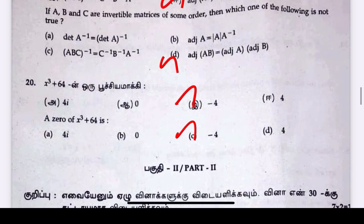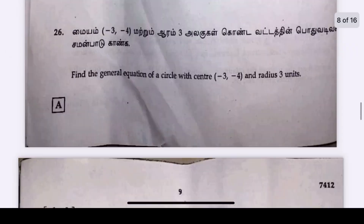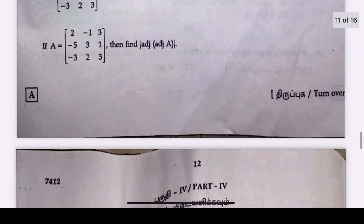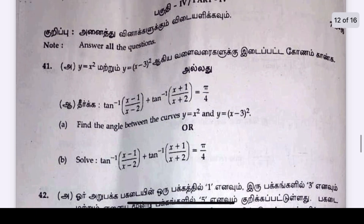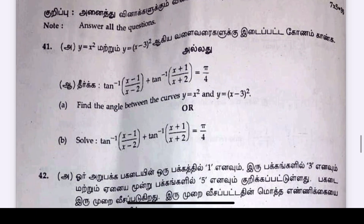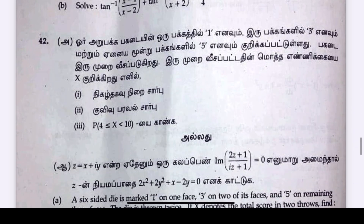This is the correct answer. The correct answer for the 12th question is y equal to x squared and y equal to (x minus 3) whole square.